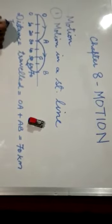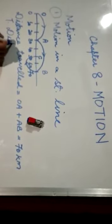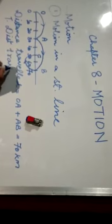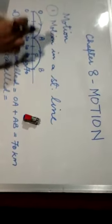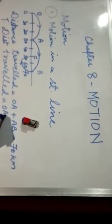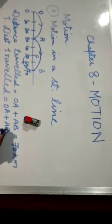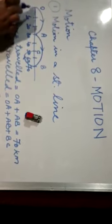Now, if we are calculating the total distance traveled, that will be equal to the total length covered, that is, OA plus AB plus BC. So, that comes out to be equal to, up till O to B it was 70 and then another 20, so it comes out to be equal to 90 kilometers.